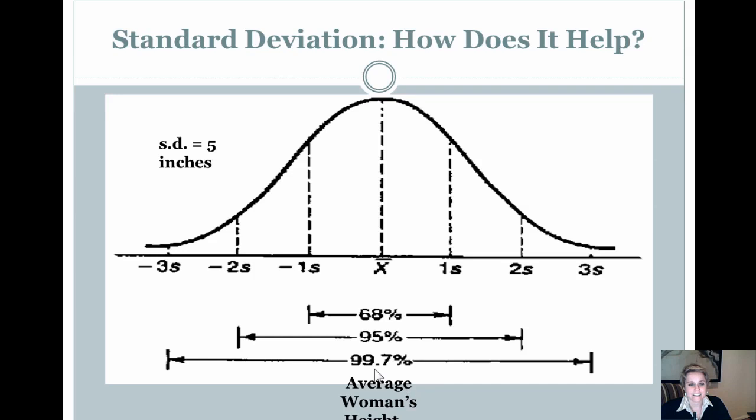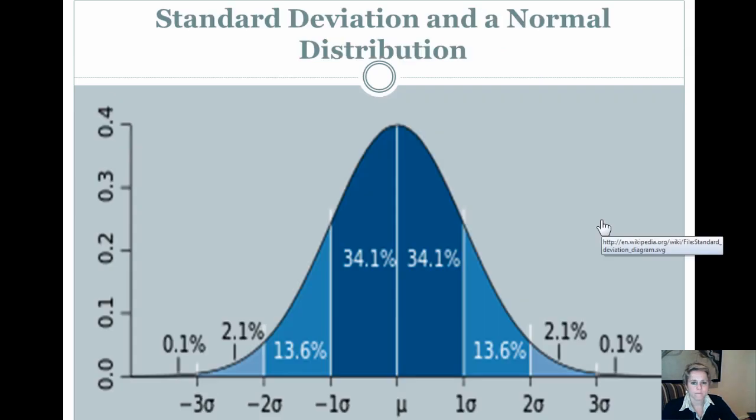And then lastly, 99.7% of all data would fall between 15 inches or 1 foot 3 inches under 5'5", and 15 inches above 5'5". So standard deviation is pretty powerful because it really gives you an indication of where most of your data would end up being.